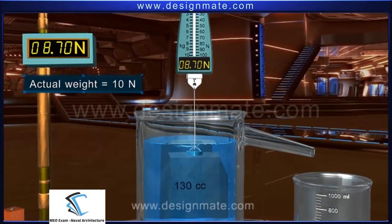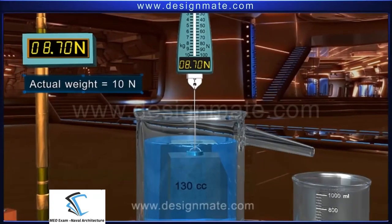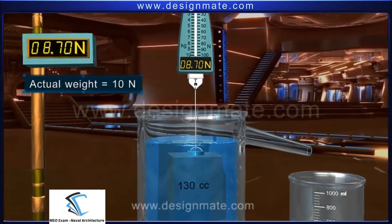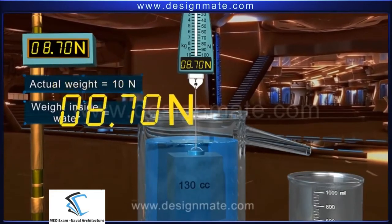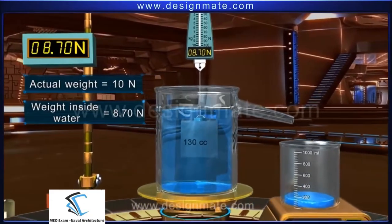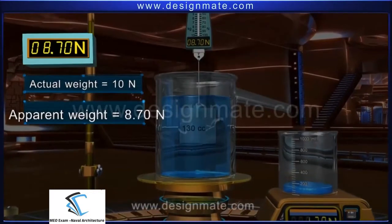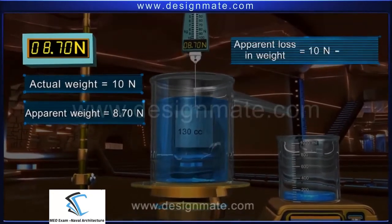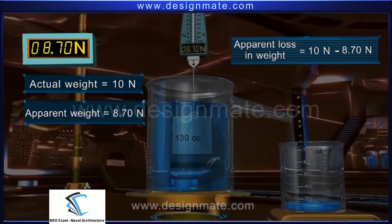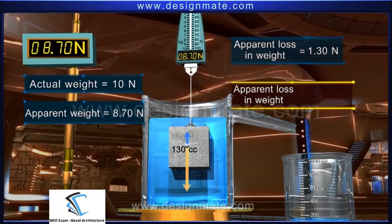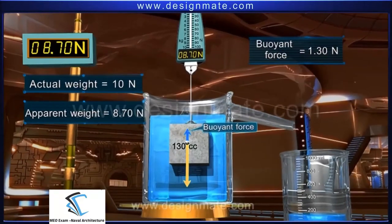Once the object is completely immersed in water, no more water flows out and the balance shows a steady reading. Note this new reading — it is 8.70 newton. Hence, the object appears to be lighter inside the water. This is called its apparent weight in water. The object appears to have lost 10 minus 8.70 equals 1.30 newton. This apparent loss in weight is equal to the buoyant force acting on the object, which is therefore 1.30 newton.